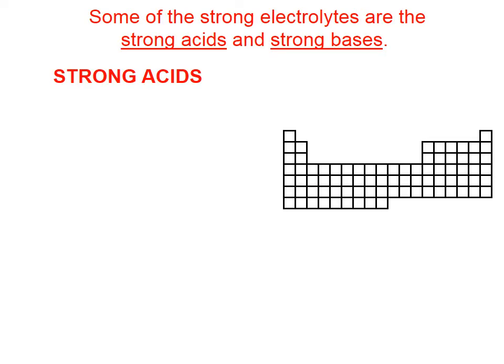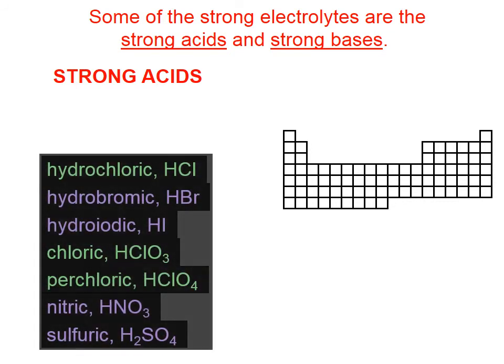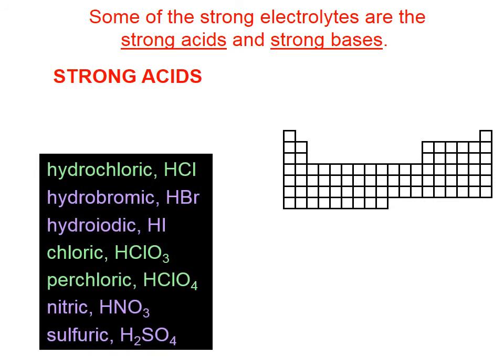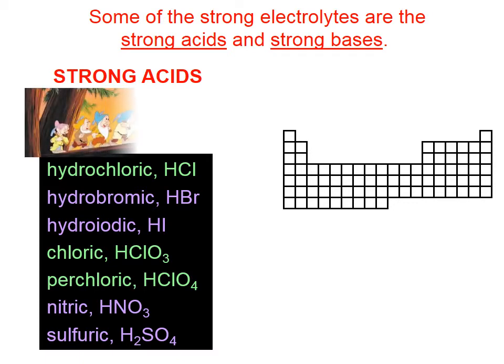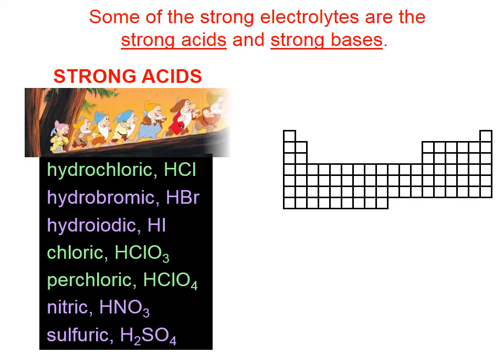Some of the strong electrolytes are the strong acids and strong bases. There are seven strong acids: hydrochloric, hydrobromic, hydroiodic, chloric, perchloric, nitric, and sulfuric. I ask my students to memorize these — sometimes I refer to them as the seven dwarfs because there are seven of them. Note that three of them involve chlorine and the other four contain elements shown in purple on this periodic table.